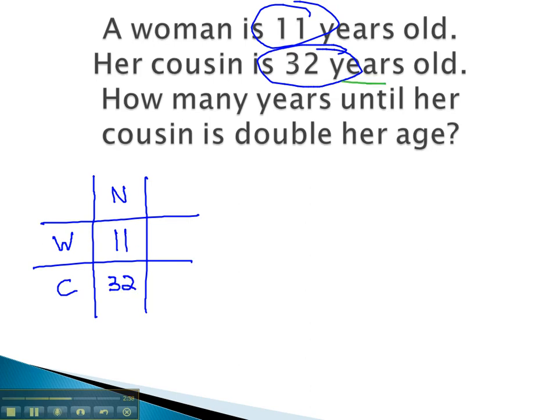As for the change, we are not given this number. How many years until? This is moving to the future, so we are going to add t to both cells. We now have 11 plus t for the woman, and 32 plus t for the cousin.